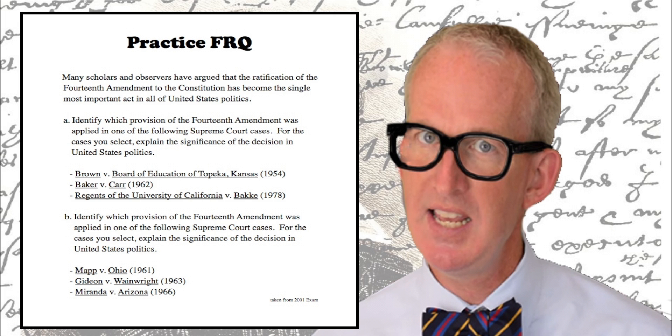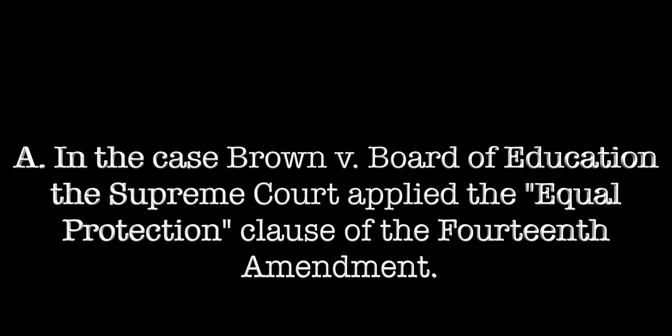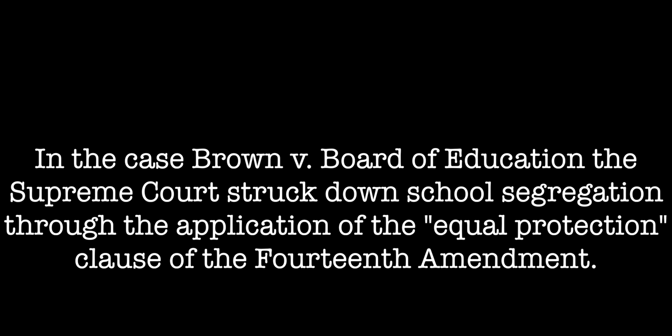Let's dive in. Part A — when looking at these three cases, Brown, Baker, and Bakke, these are all civil rights cases. The civil rights provision in the 14th Amendment is equal protection. Let's choose Brown. In Brown v. Board of Education, the Supreme Court applied the Equal Protection Clause of the 14th Amendment. The Brown v. Board of Education case desegregated the schools. Segregation deprived the plaintiffs of the equal protection of the laws under the 14th Amendment.